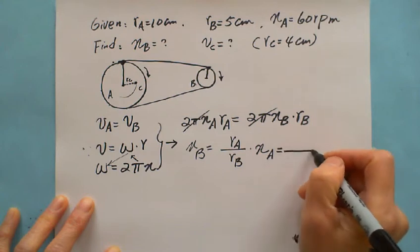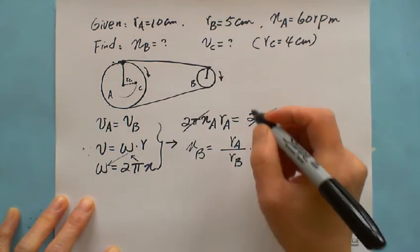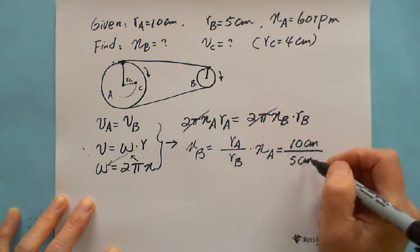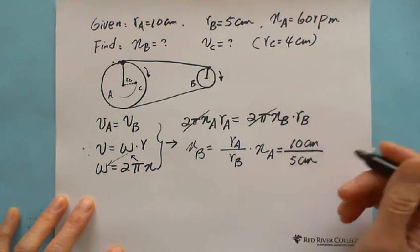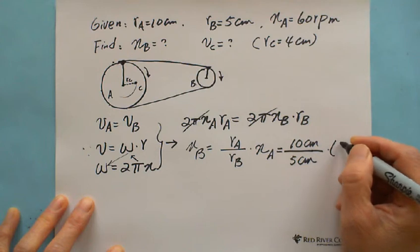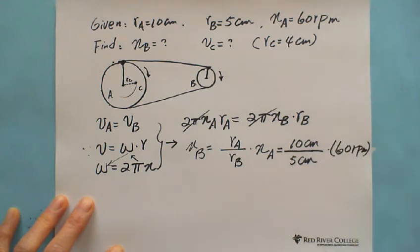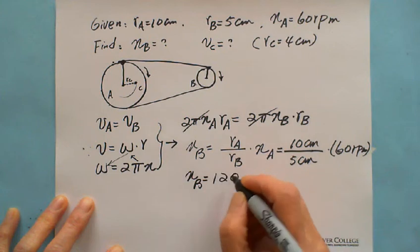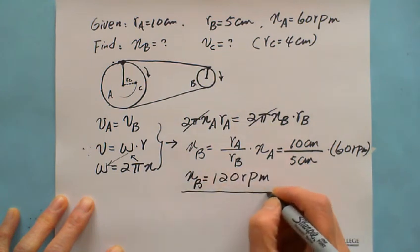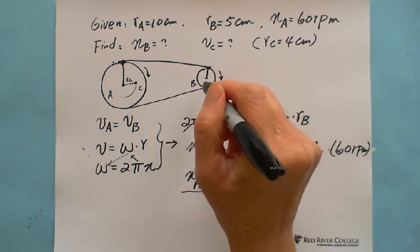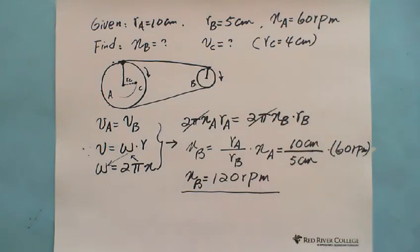So we have RA is 10 cm and RB is 5 cm. Since RA over RB have the same unit, they cancel out, so we don't need to convert to meters. Multiplying by NA equals 60 revolutions per minute: NB equals 10 divided by 5, times 60, which equals 120 revolutions per minute. We can also see that since RB is half of RA, pulley B turns double — or faster — than pulley A.